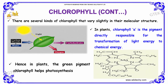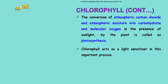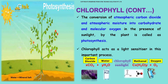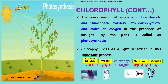There are several kinds of chlorophyll that vary slightly in their molecular structure. In plants, chlorophyll A is the pigment directly responsible for the transformation of light energy to chemical energy. Hence, the green pigment chlorophyll is helpful for the photosynthesis process. The conversion of atmospheric carbon dioxide and atmospheric moisture into carbohydrate and molecular oxygen in the presence of sunlight is called photosynthesis.